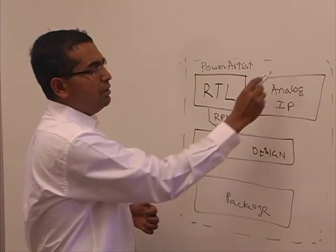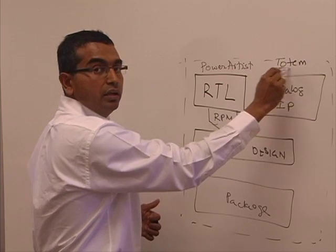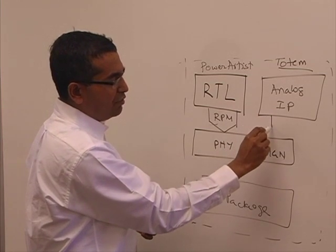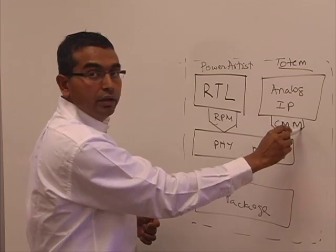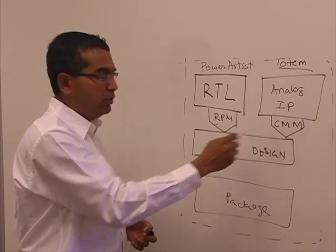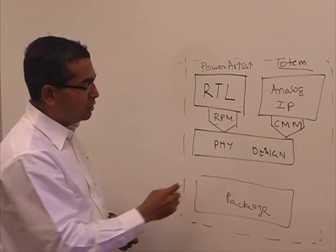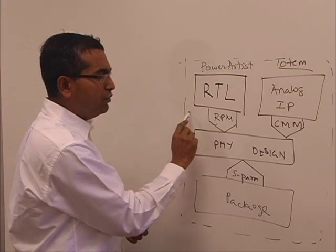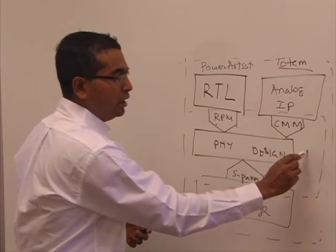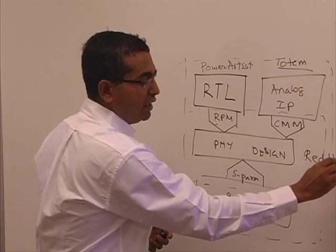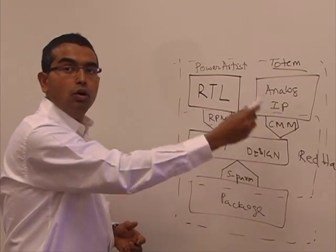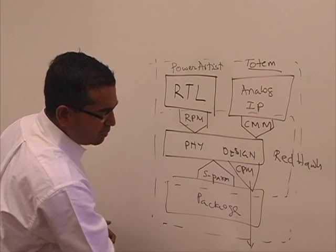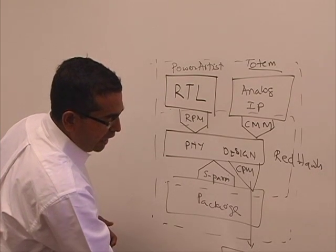When we analyze an analog IP, our customers use a technology called Totem, qualified down to 20 nanometer technologies for extraction, ESD, and electromigration. Once they have validated the IP, they create a compact macro model — an encrypted version of the design suitable for system-level and SOC-level validation. From the package, we bring in a model that can be used to validate the RTL, the analog IPs, and the package all in one environment. At the end of the process, we write out a chip power model that can go into the system level for package, chip, and PCB sign-off.